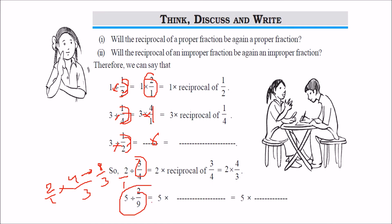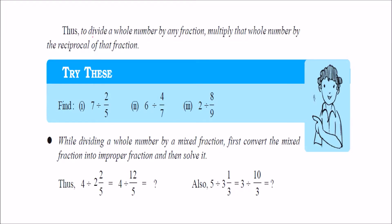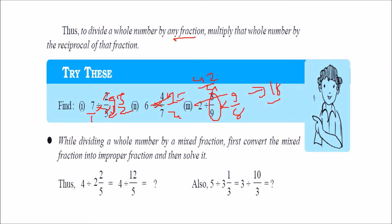5 divided by 2 by 9 is nothing but 5 into 9 by 2. To divide a whole number by a fraction, we just multiply the whole number by the reciprocal of that fraction. So 7 divided by 2 by 5 is 7 into 5 by 2. And 6 into 7 by 4 gives 42 by 4. Here it will be 9 by 8, or 18 by 8, which you can cancel out — since 2 fours are 8 and 2 nines are 18.